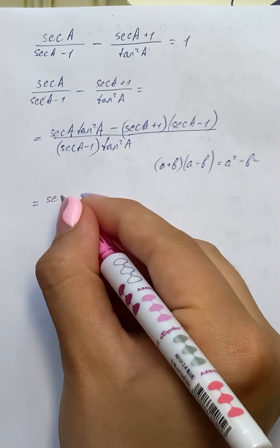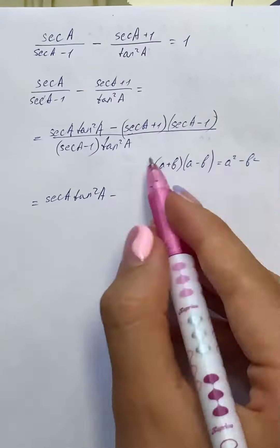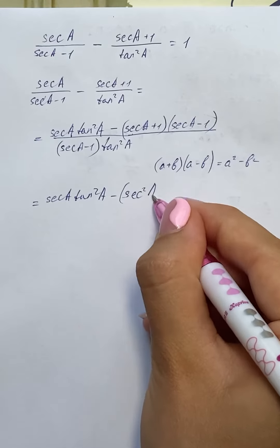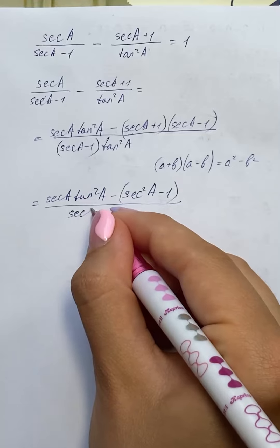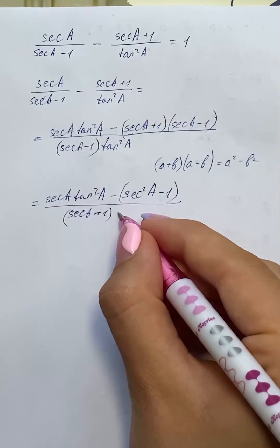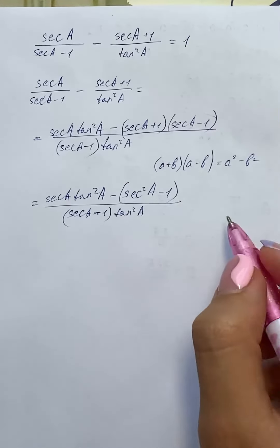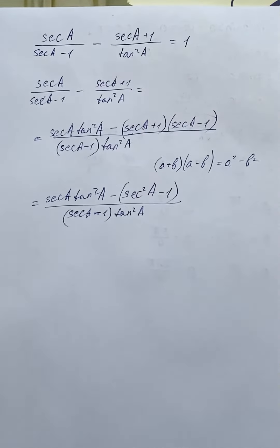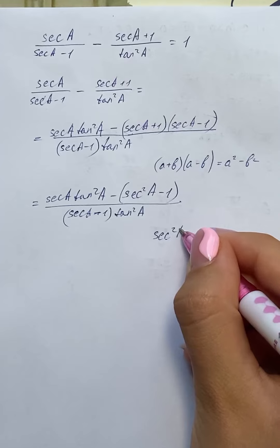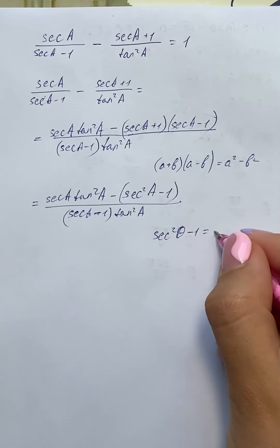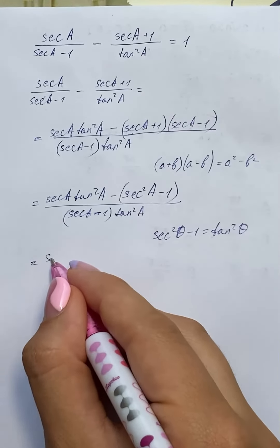So we have secant of a times tangent squared of a, minus secant squared of a minus one, over secant of a minus one times tangent squared of a. Now we're going to use the identity which looks like secant squared of theta minus one equals tangent squared of theta.